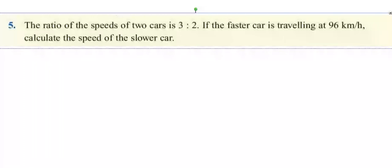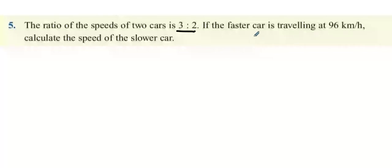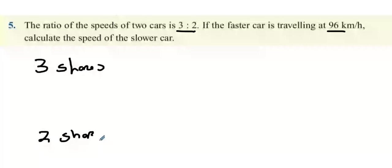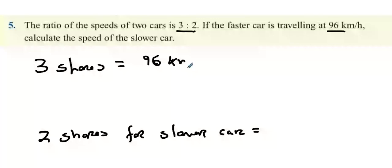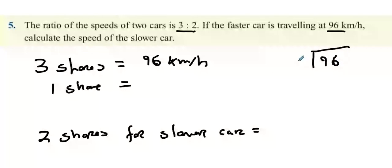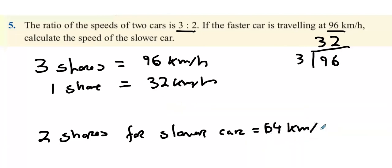Question 5. The ratio of speeds of two cars is 3 to 2. If the faster car is travelling at 96 kilometres per hour, calculate the speed of the slower car. Three shares is the faster car, two shares for the slower. Three shares equals 96 km/h, so one share is 96 divided by 3, which is 32 kilometres per hour. Multiply by two to get two shares: 64 kilometres per hour.